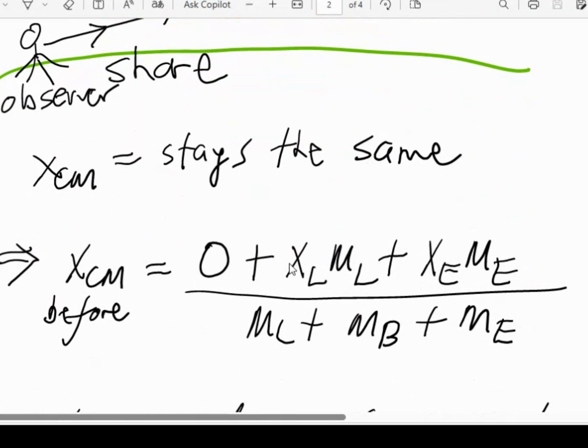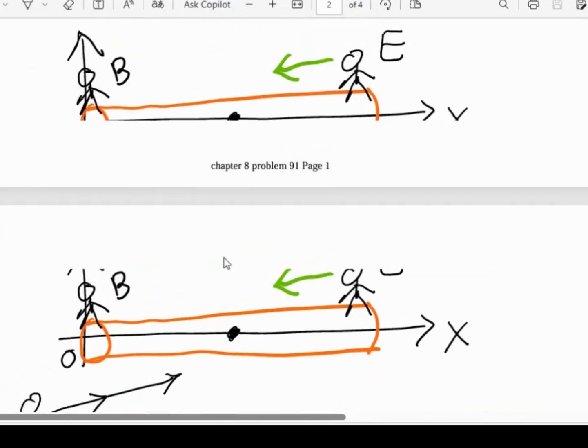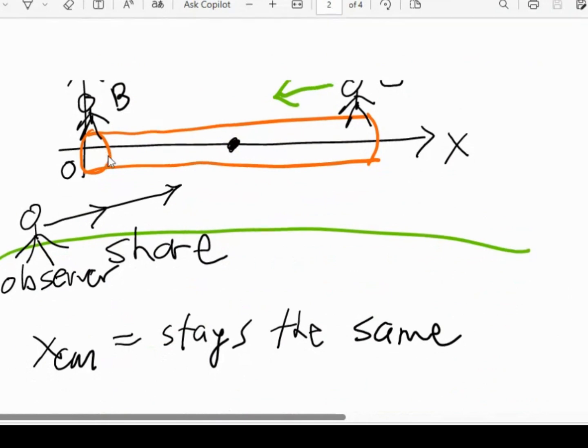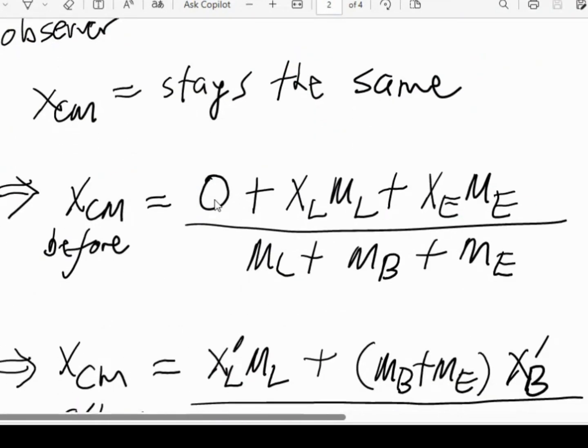So we have X of log, the mass of the log, plus the X of Ernie, mass of Ernie. And Burr, which is at the far left of the log situated at the origin, so its position is zero. So all the distances are going to be divided by the total mass.